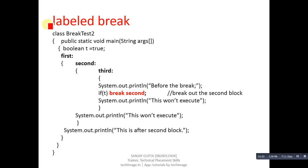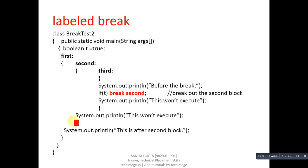In the case of labeled break, we can use labels in the program such as first, second, and third. Each label contains its own separate block enclosed inside curly braces. This is the third block, this is the second block, and this is the first block. Inside the third block, an if condition is used.